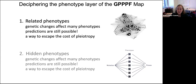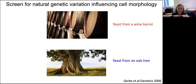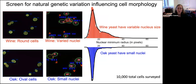In this first project, I'm going to focus on measuring the relationships between phenotypes to try to make predictions about which phenotypes we expect will be jointly affected by genetic changes. This is a project I worked on with Mark Siegel at NYU, along with graduate, undergraduate, and high school trainees. It started because we were trying to map the genetic basis of differences in single cell morphology between yeast isolated from a wine barrel and yeast isolated from soil near an oak tree. These yeast look pretty different — the wine cells are very round while the oak cells are more elongated.